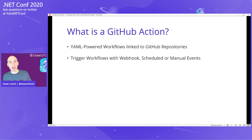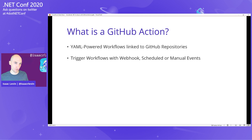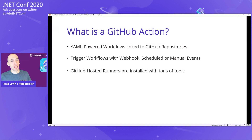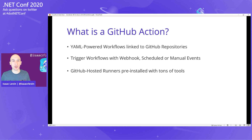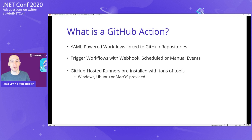These workflows are triggered a handful of different ways. They can be triggered by GitHub webhooks, you can schedule them, or you can manually click to run a GitHub Action directly from the GitHub UI. When the workflows run, they run on what's called a runner. Runners come in two forms: GitHub-hosted or self-hosted. The GitHub-hosted ones are awesome — they come in Windows, Ubuntu, or macOS, and they have a ton of pre-installed software, including a handful of versions of the .NET Core SDK.